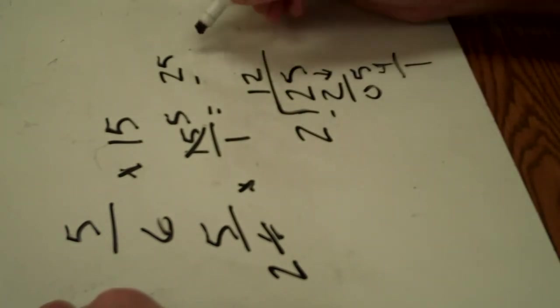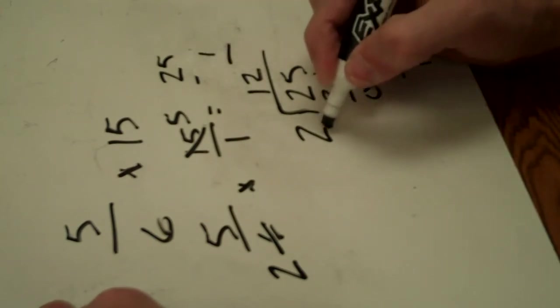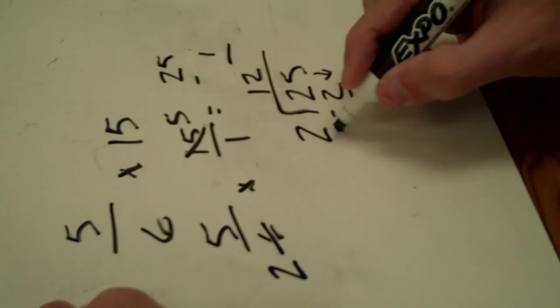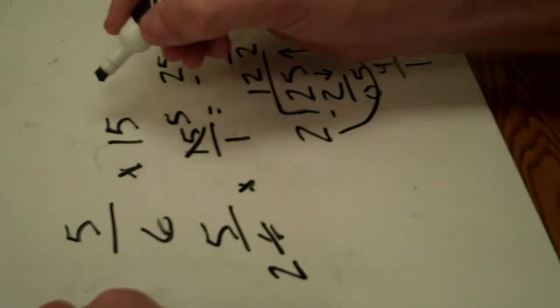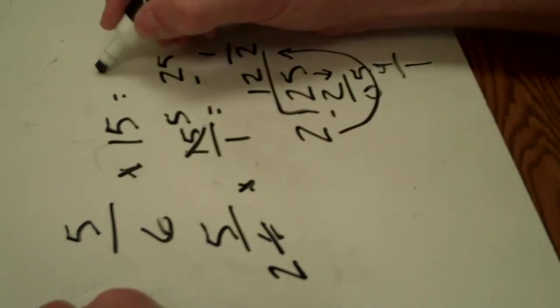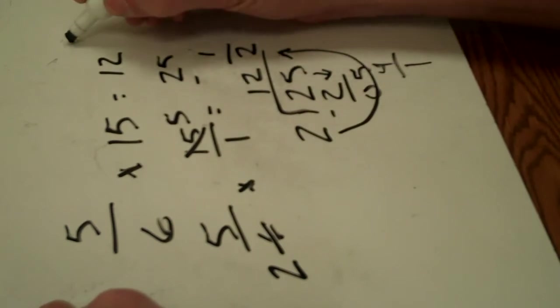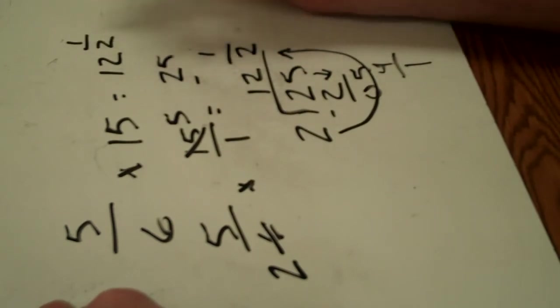Whenever you have a remainder, the remainder is going to go on the top and this number here that you divide by is going to stay on the bottom. So, the answer to 5/6 times 15 equals 12 and 1/2.